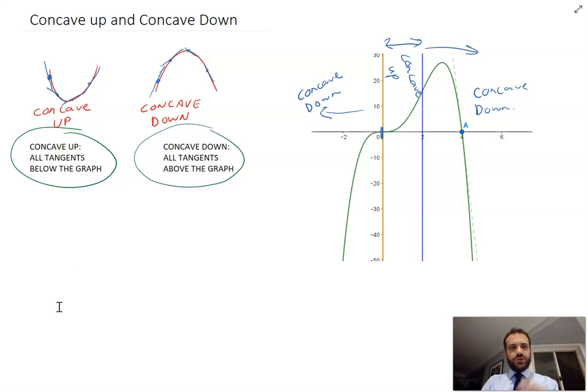And then we moved up a notch and we said concave up, all the tangents are below the graph, and concave down, all of the tangents are above the graph. Now we're going to jump, we're going to look at this graph on GeoGebra and see exactly what's happening during the concave down phase and the concave up phases.